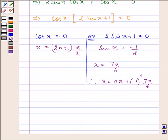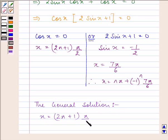The general solution of the equation is x is equal to 2n plus 1 multiplied by pi by 2 or n pi plus minus 1 raised to the power n, 7 pi by 6.